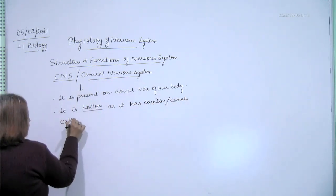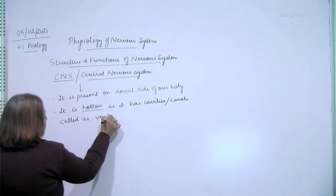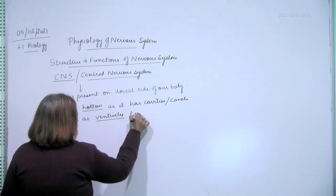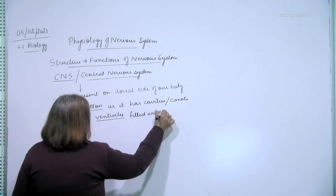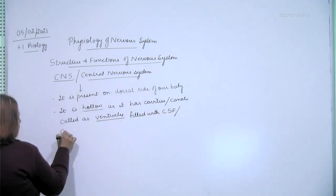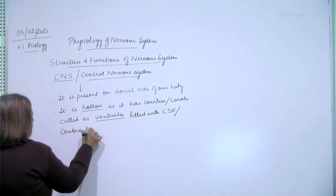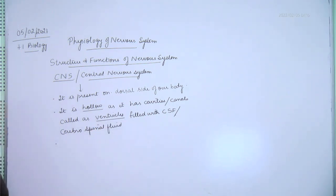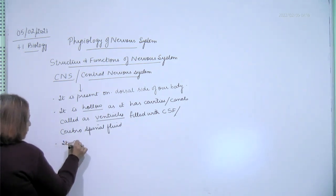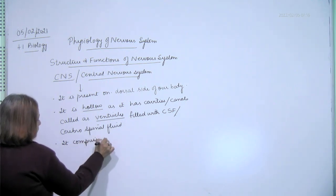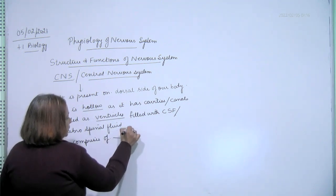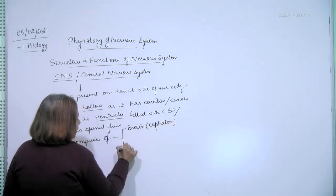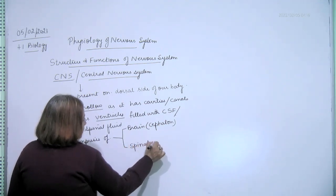Called as it has cavities and canals, it is called as ventricles, cerebro-spinal. It comprises of brain, cephalon, spinal cord, myelon.